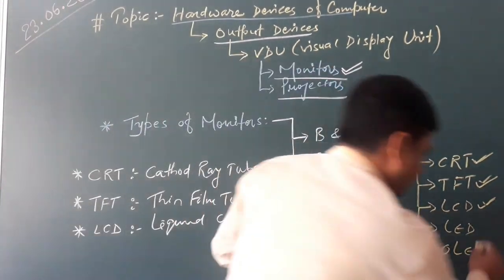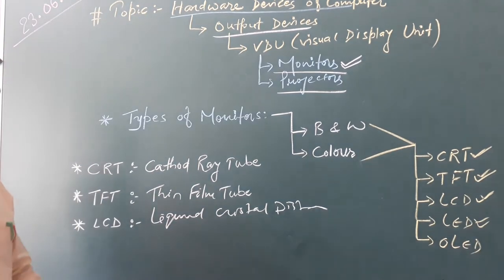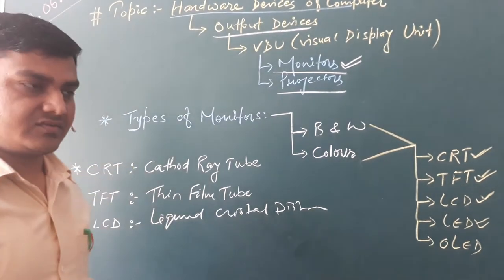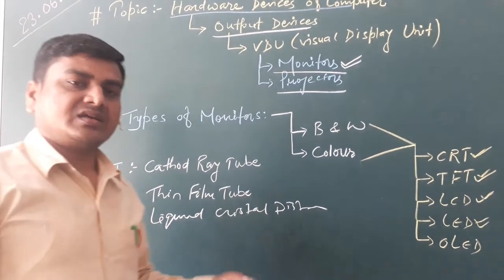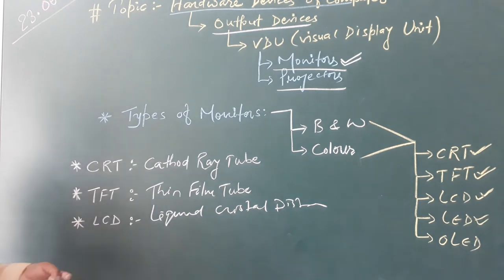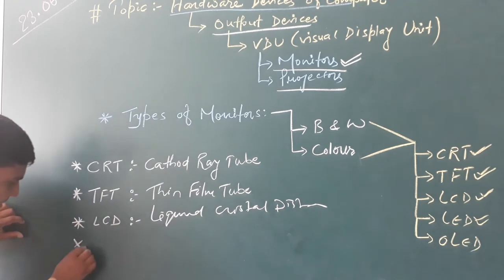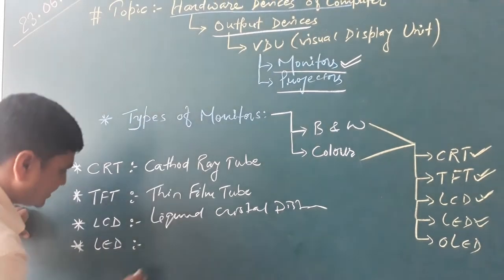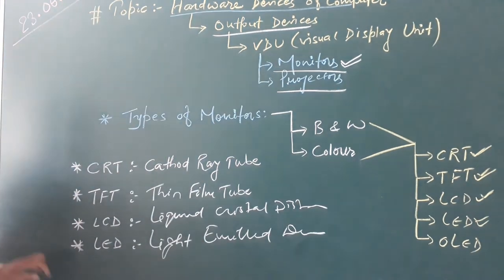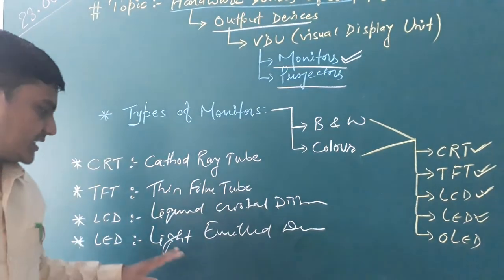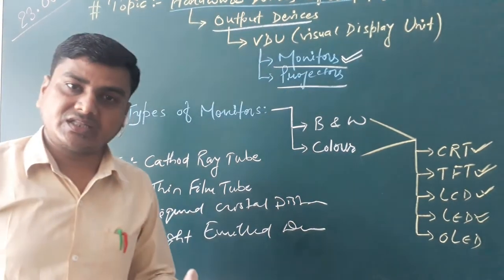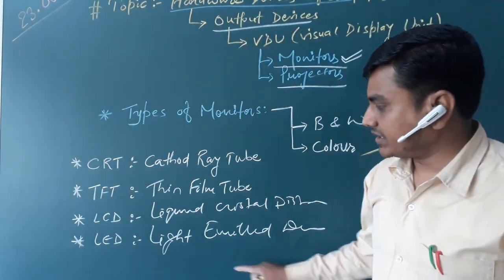After LCD, we have LED. LED was one of the most widely used kinds of monitors, and we find it almost everywhere now — in laptops, PCs, at home, at school, at the bank, at the post office. LED stands for Light Emitting Diode. Inside this monitor, Light Emitting Diode technology is used to display all results on the screen. There is no tube, film, or liquid type of technology — instead, light-emitting diodes are used to display the results.